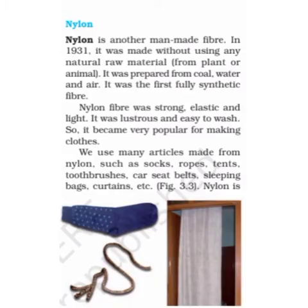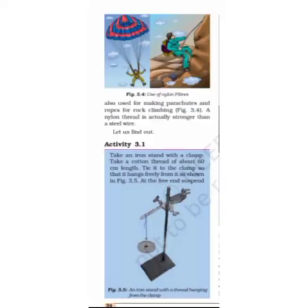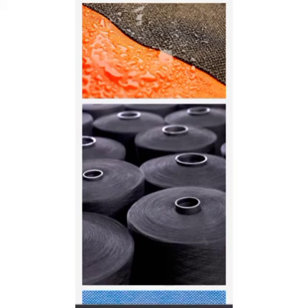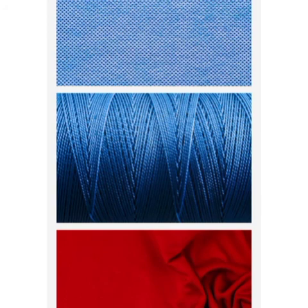Nylon is another synthetic fiber which was made in 1931. This is the first fully synthetic fiber. During its preparation, we are not using any natural polymers, so this is the first fully man-made fiber. It is strong, elastic, and light. It has a lustrous appearance and is very easy to wash, which is why it is very popular among people.